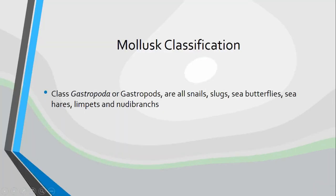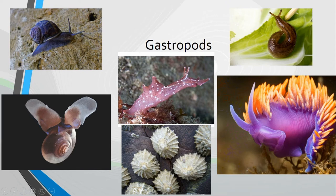So mollusk classification. Our first class is going to be class Gastropoda, or the gastropods. They are all the snails, slugs, the sea butterflies, sea hares, limpets, and animals called nudibranchs. So let's go ahead and take a look at some of them.